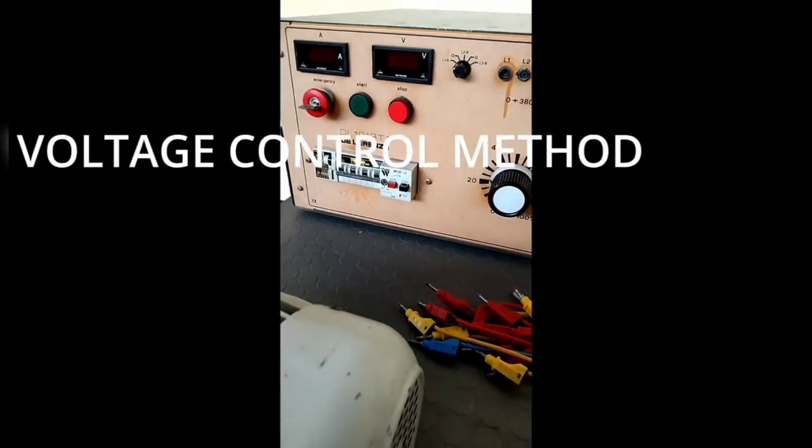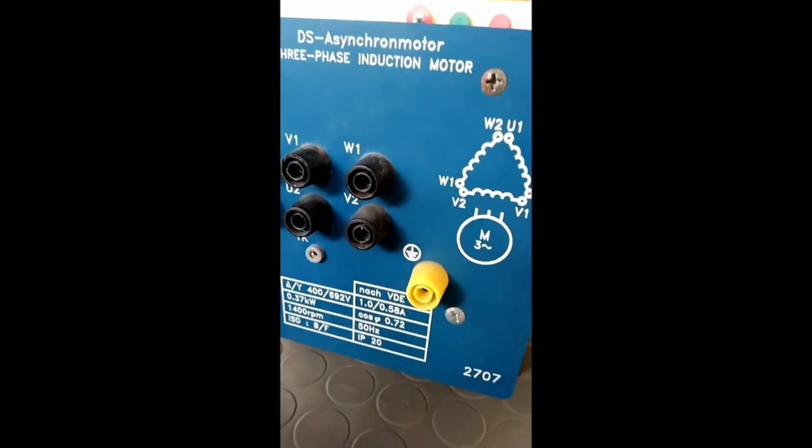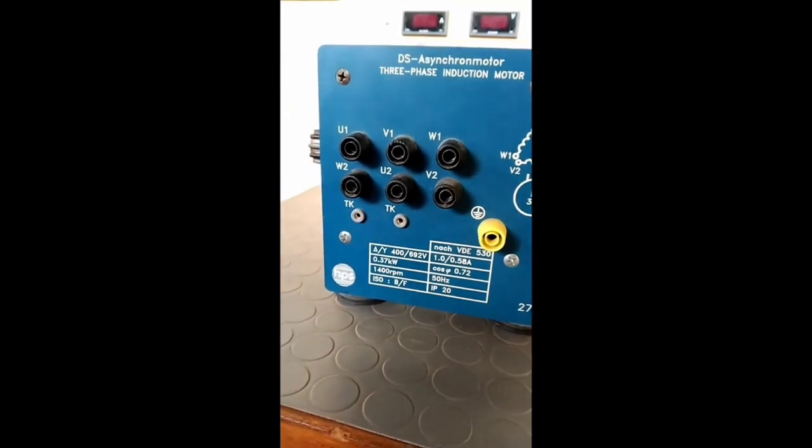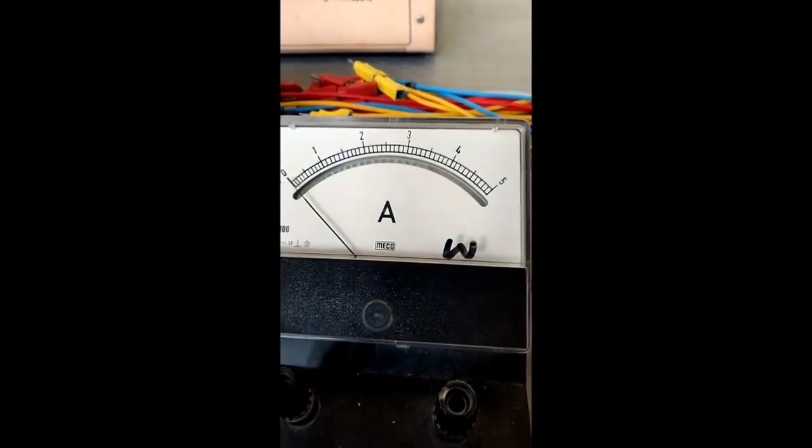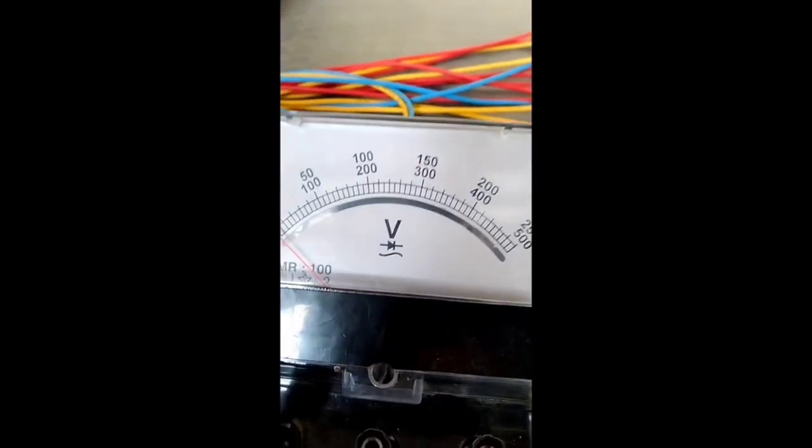Variation of supply voltage. In this method, the speed of induction motor is controlled by varying the supply voltage. In this practical, we are going to use three-phase induction motor connected in delta connection.